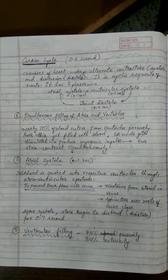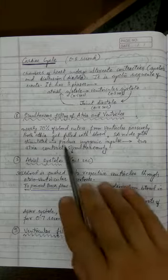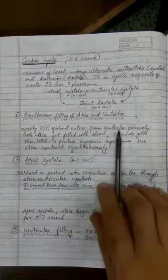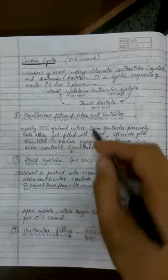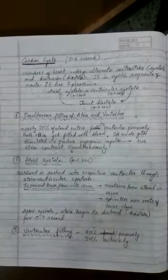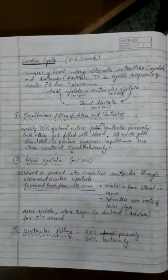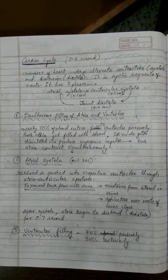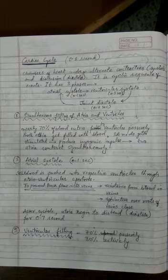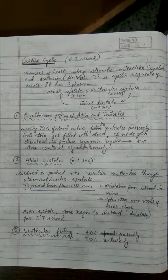Due to this simultaneous filling, nearly 70% of the total blood enters the ventricles passively. Both atria get filled with blood, the SA node gets stimulated and produces the myogenic impulse. So during this simultaneous filling phase, 70% of the blood has already reached the ventricle passively before any active contraction occurs.